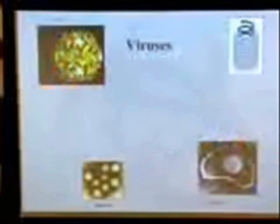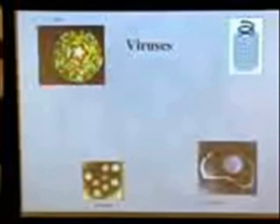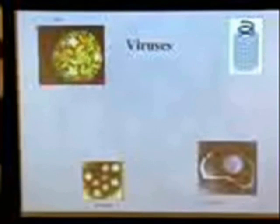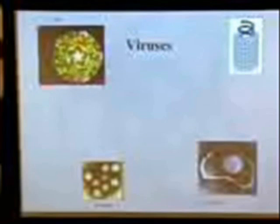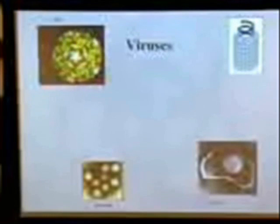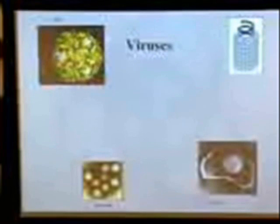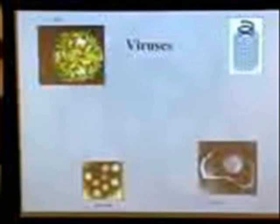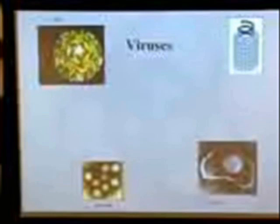Sometimes they have helical structures, which are pretty stable as well. Here's a helical structure — you have the protein capsid on the outside of the helix, and then the DNA core wrapped around the inside. Here's another polyhedral virus — it's a naked virus. That's the poliovirus. Here's the papillomavirus. Here's the herpesvirus, which does have an envelope around it.